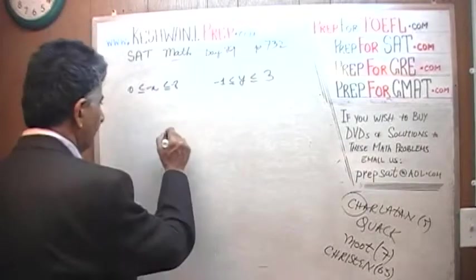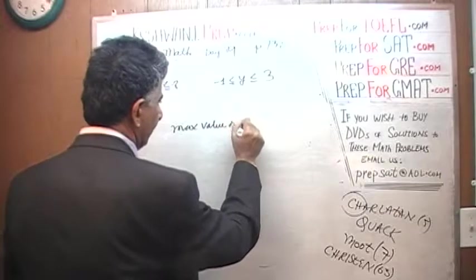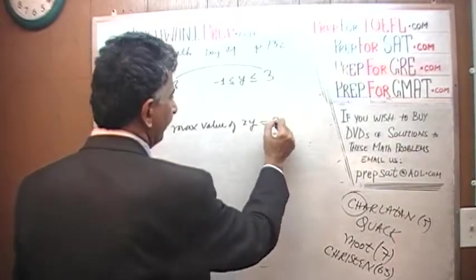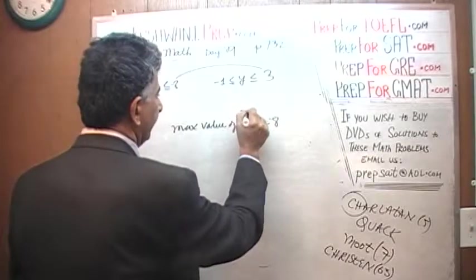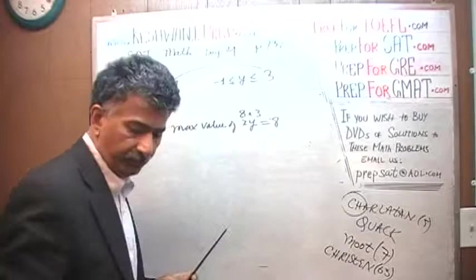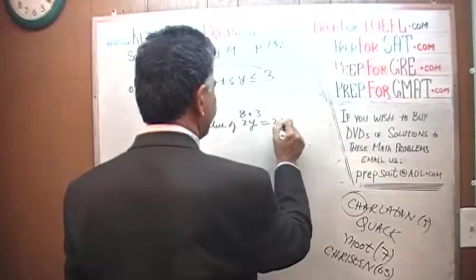Or rather, they are not looking for maximum possible value of X times Y. If this is what they were looking for, maximum value of X and Y, that would have been very simple, the maximum value would be 8 times 3, or 24.